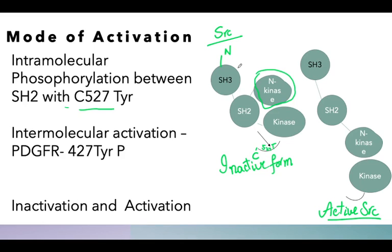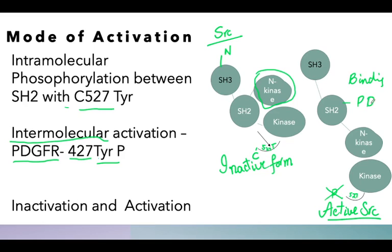In intermolecular activation, PDGFR — platelet-derived growth factor receptor — recognizes tyrosine 427 phosphate. This tyrosine 427 phosphate leads to a structural conformational change such that the binding affinity of tyrosine 527 is lost. There is a linearization — a linear formation of SH3 and SH2 — which leads to the exposure of the binding site for PDGFR, which is present on the cell membrane. So the binding site of PDGFR recognizes tyrosine 427 phosphate.